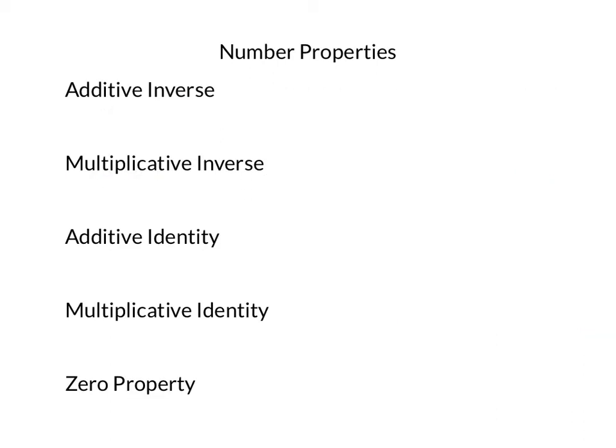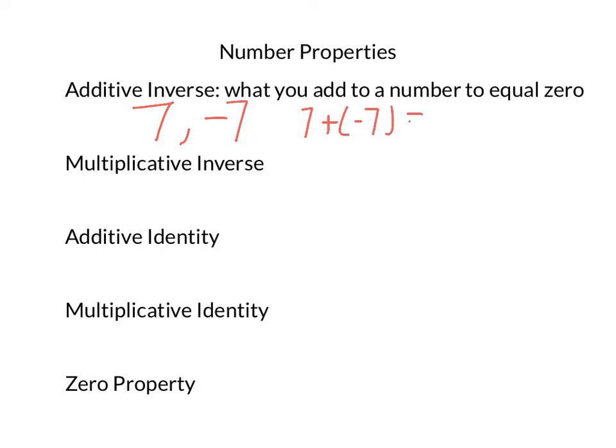And here we have the last five properties we're going to talk about today, or at least in this video. The additive inverse, multiplicative inverse, additive identity, multiplicative identity, and the zero property. So, the additive inverse is defined as what you add to a number to equal zero. So, one example would be 7. The additive inverse would be negative 7, because 7 plus negative 7 equals 0.